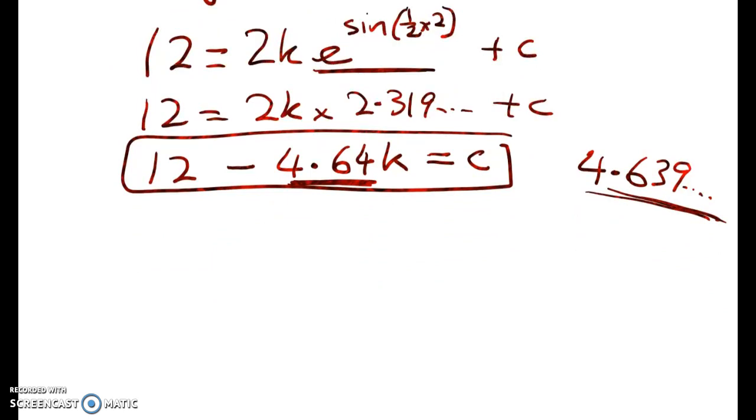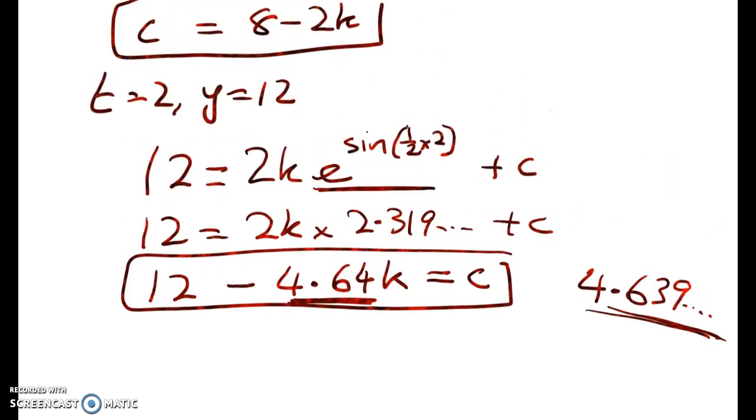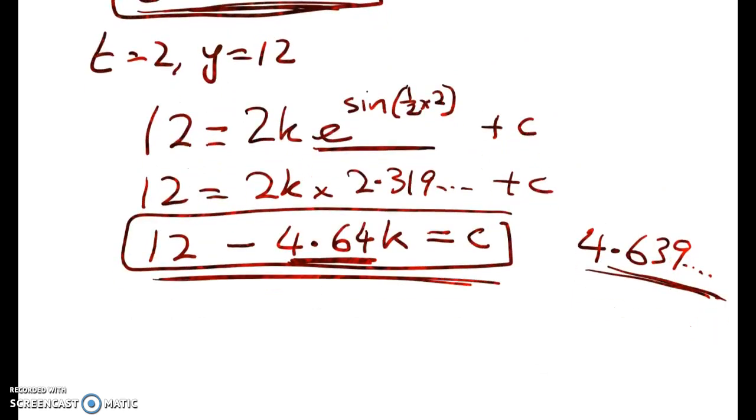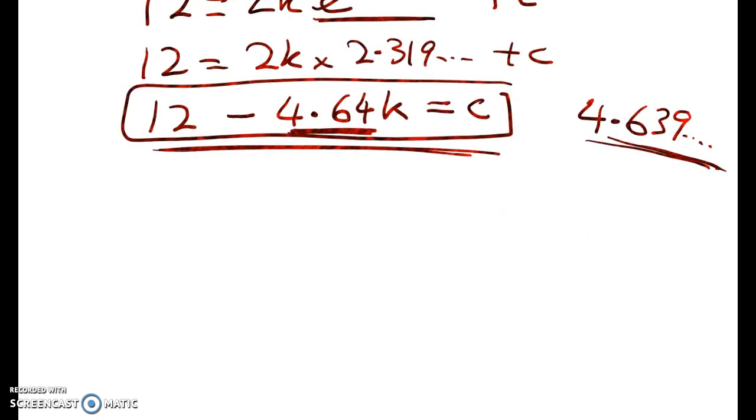That gives me now two equations and two unknowns. So c is equal to 8 minus 2k, and c is also equal to this, so we can equate those two things.